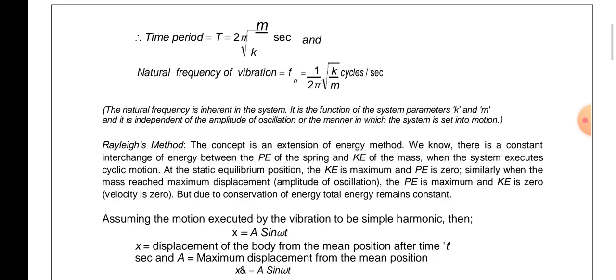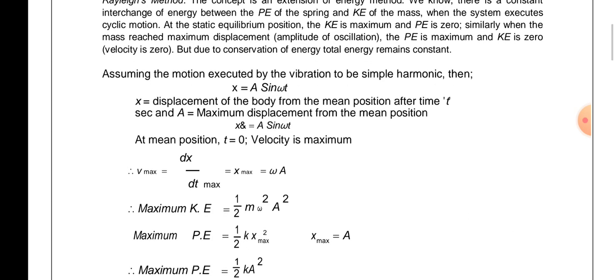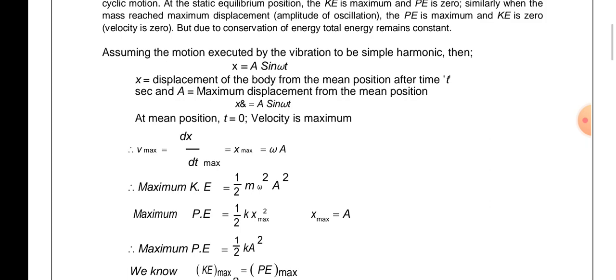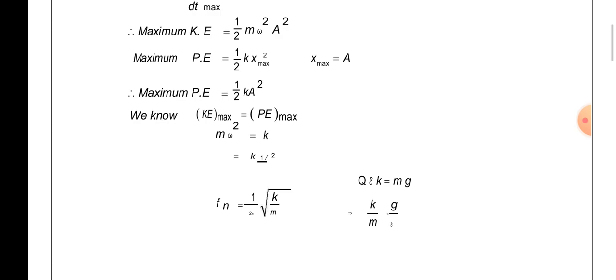Assuming the motion to be simple harmonic: x = A·sin(ωt), where x is the displacement of the body from the mean position after time t. Then v_max = (dx/dt)_max = Aω. Maximum KE = ½mω²A². Maximum PE = ½k·x_max² = ½kA². Setting maximum KE equal to maximum PE: mω² = k, so fn = 1/(2π)·√(k/m), and since k/m = g/δ, fn = 1/(2π)·√(g/δ).